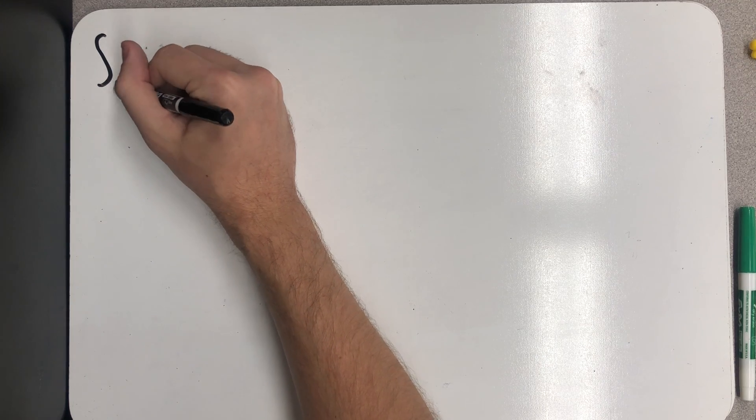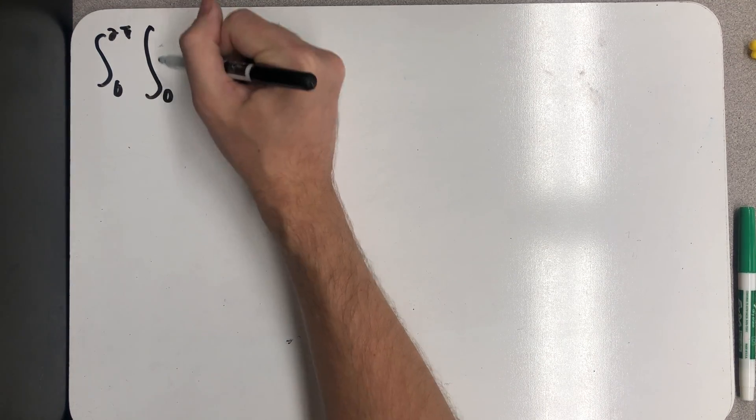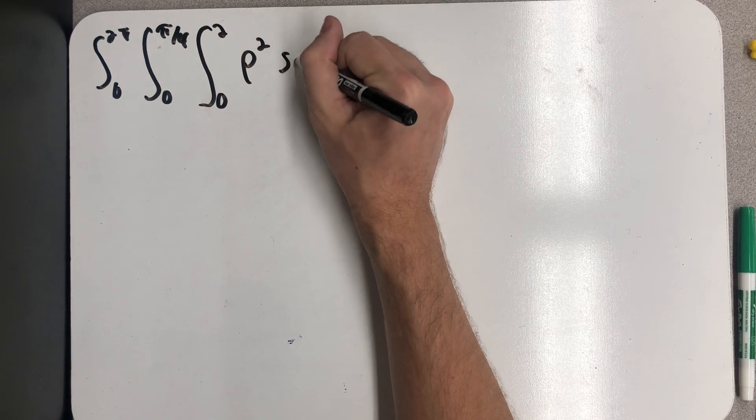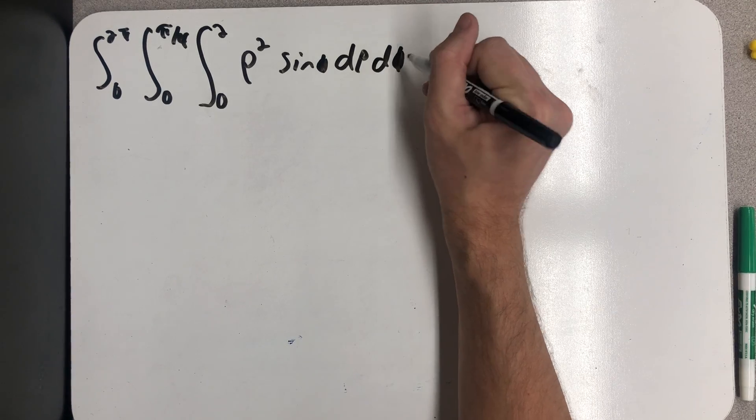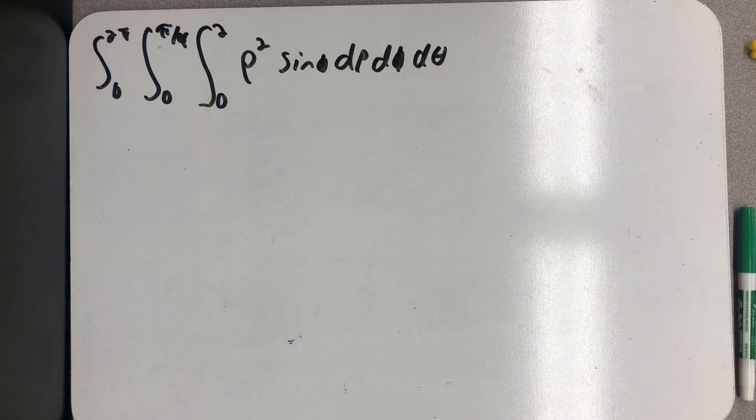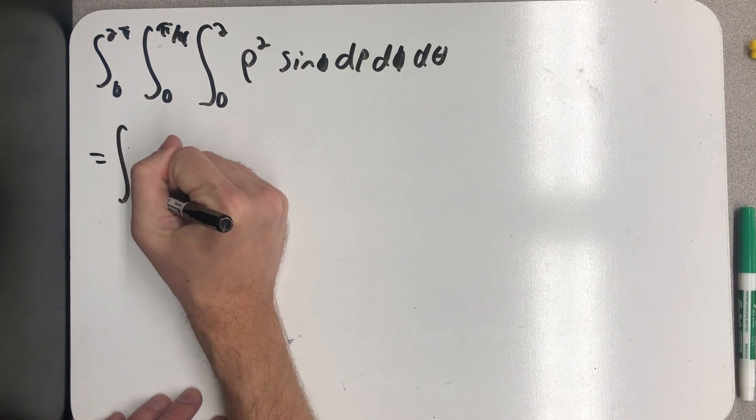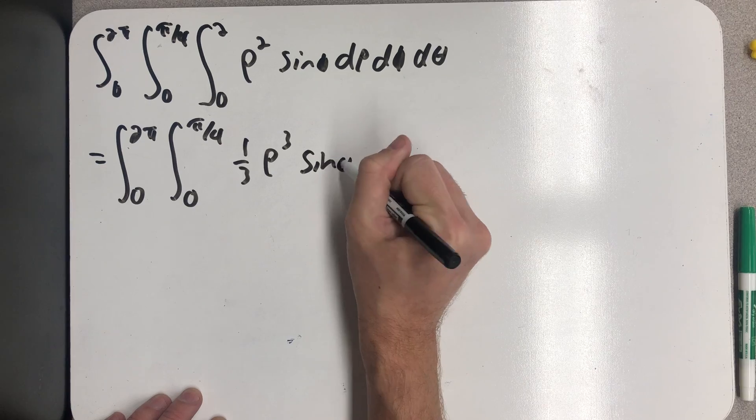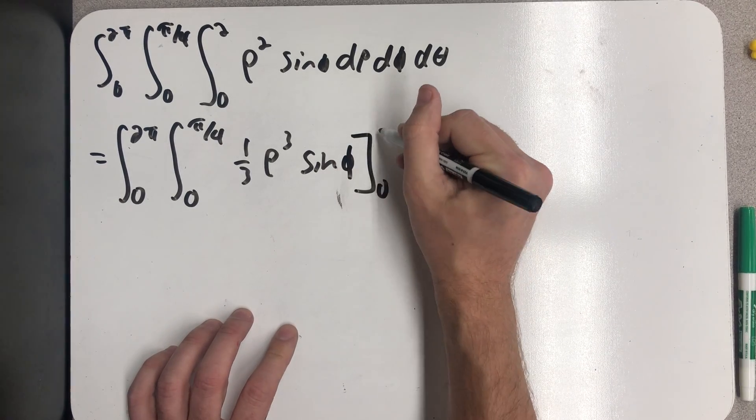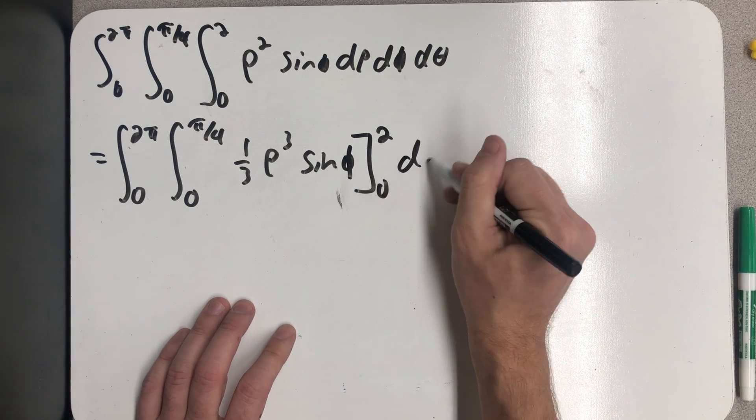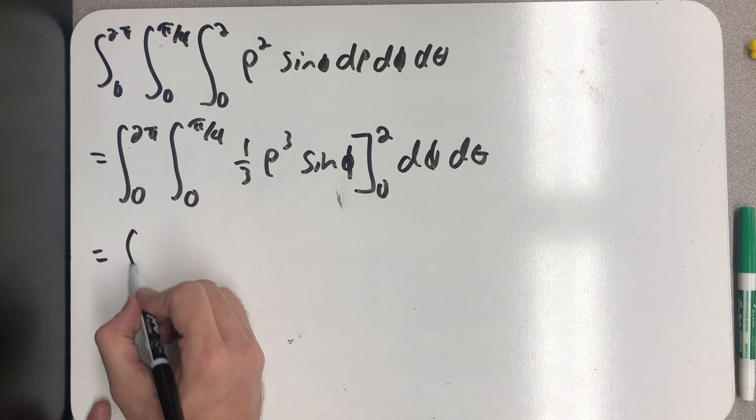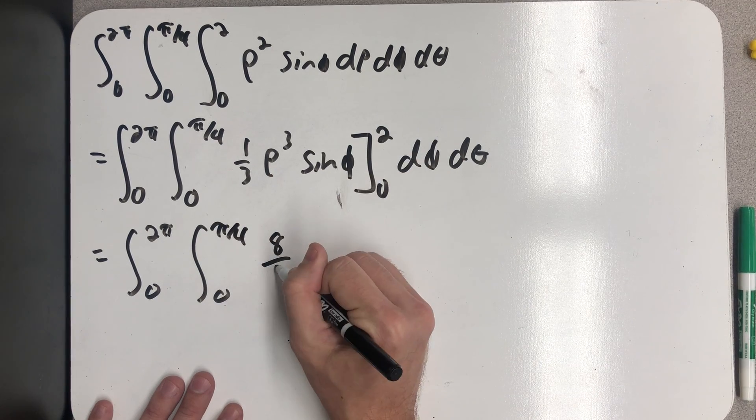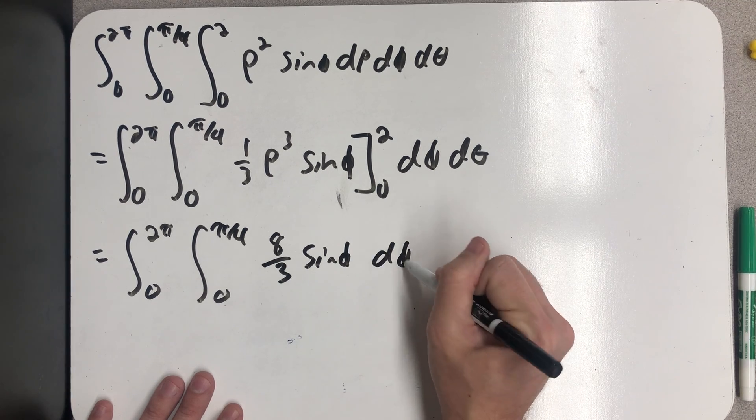So I have the triple integral here, zero to 2 pi, zero to pi fourths, zero to 2, rho squared sine phi, d rho, d phi, d theta. So let's integrate with respect to rho. And I need to evaluate that from 0 to 2, rho is 0 to rho is 2, d phi, d theta. Well, not too hard to evaluate. I get 8 thirds sine phi and then minus 0, d phi, d theta.